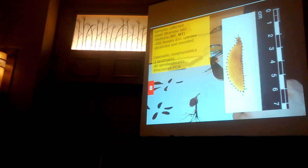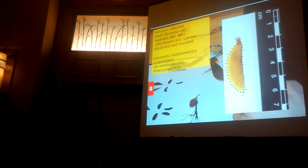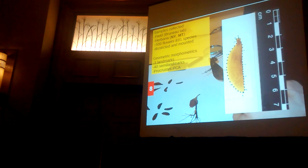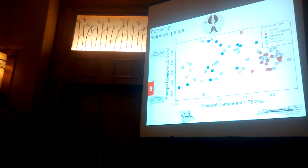We used three landmarks and four semi-landmarks. Landmarks are fixed points at the base and tip of the petal — in this case the standard petal. The four semi-landmarks are equally spaced along the outline. We then ran a Procrustes PCA analysis — basically a principal component analysis that uses shape, specifically petal shape, instead of other conventional parameters.